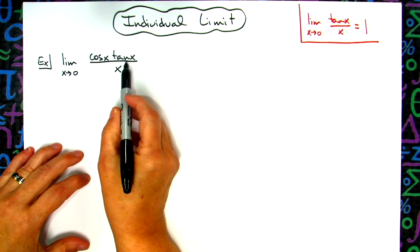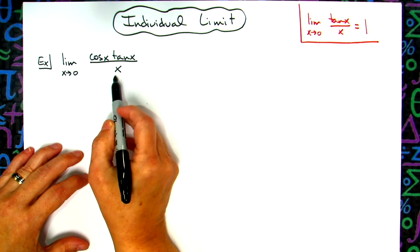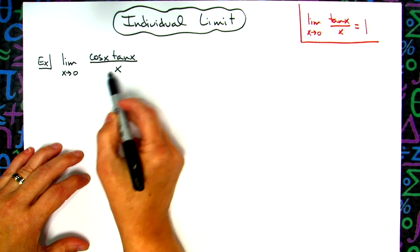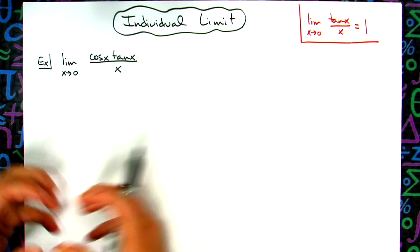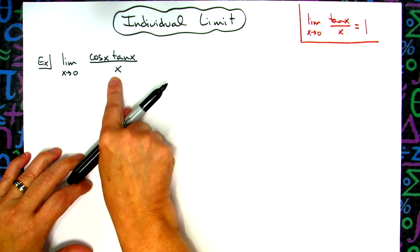So the first thing I'm going to do is take a look at this rational expression and think about how I can split this up into two fractions which multiply together to equal this rational expression.